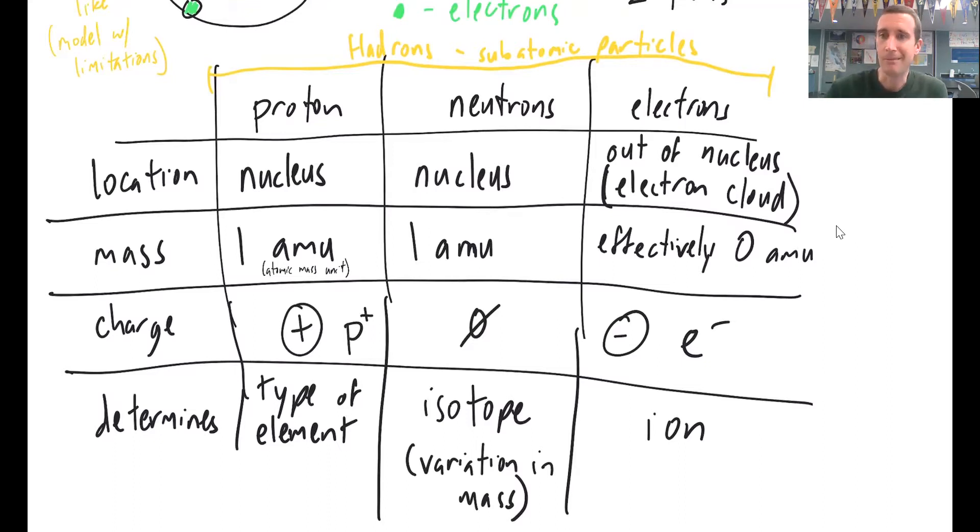But it's so small that we pretty much ignore it. You know, by the time you do significant figures, it goes away. So electrons effectively have no mass. We don't consider their mass when you think about the mass of an atom. So the mass is entirely based off of the protons and the neutrons.